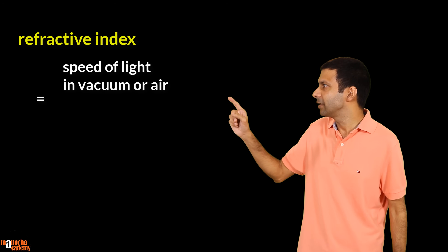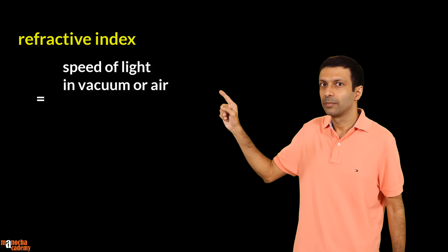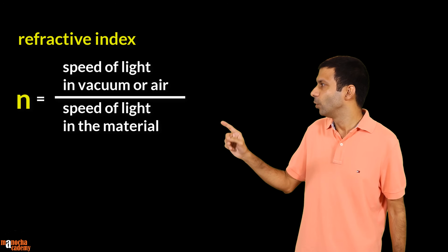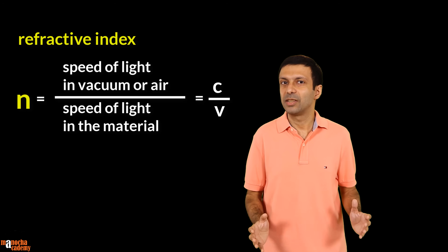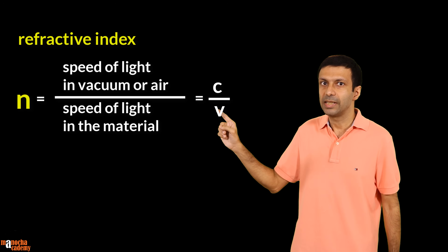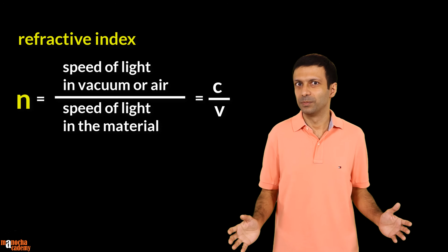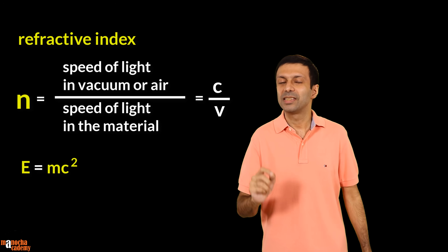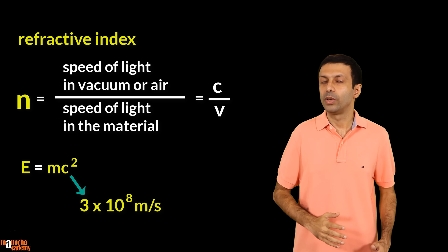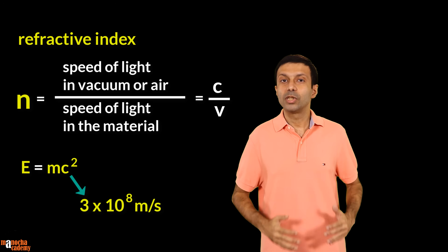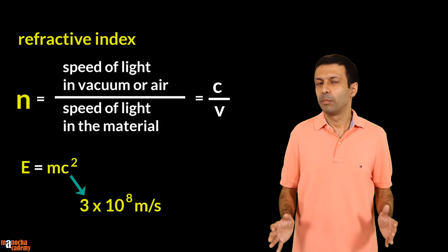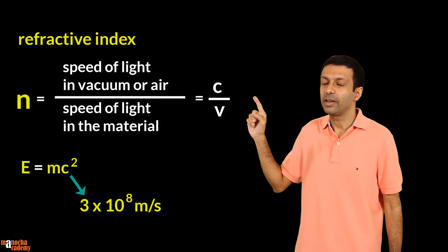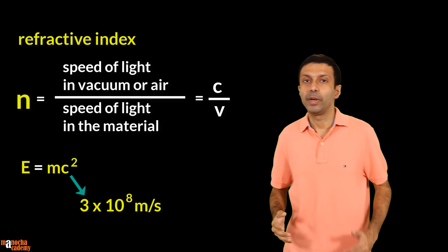Refractive index of a material is defined as the speed of light in vacuum or air divided by the speed of light in the material. The formula can be written as N = C/V, where N represents the refractive index of the material. C in physics is used to denote the speed of light in vacuum — remember Einstein's famous formula E = MC²; even here C represents the speed of light in vacuum, 3 × 10⁸ meter per second. The speed of light in air is a bit slower than vacuum but we take it to be approximately the same. So C represents the speed of light in vacuum or air, and V represents the speed of light in the material.